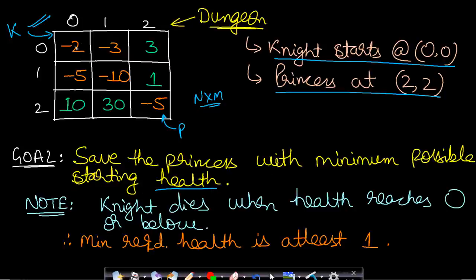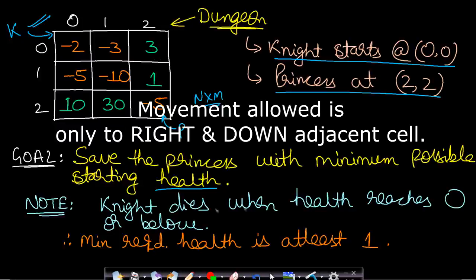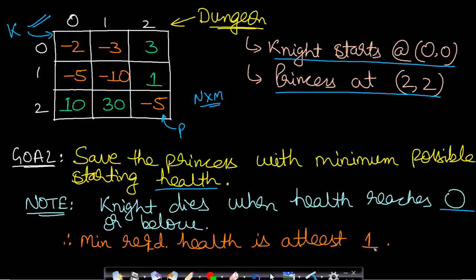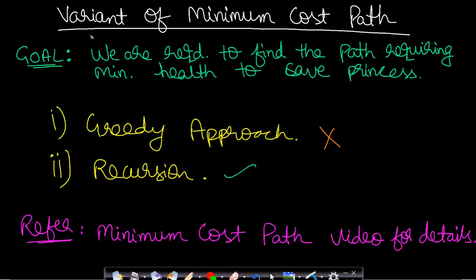The rooms in the dungeon can have power-ups or demons. Demons reduce your health and power-ups give you more health. The knight dies when health reaches 0 or below, so the minimum required health is at least 1. We are basically required to find the minimum cost path — the minimum health possible by which you can reach the princess.